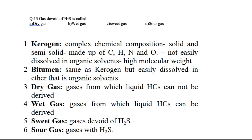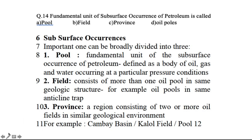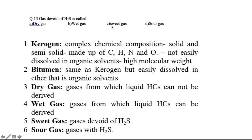Kerogen is a solid to semi-solid complex chemical compound made up of carbon, hydrogen, nitrogen, and oxygen. It is not easily dissolved in organic solvents and has high molecular weight. Bitumen is also a complex chemical compound, semi-solid to solid, made up of carbon, hydrogen, nitrogen, and oxygen, but it can be easily dissolved in organic matter and has low molecular weight.